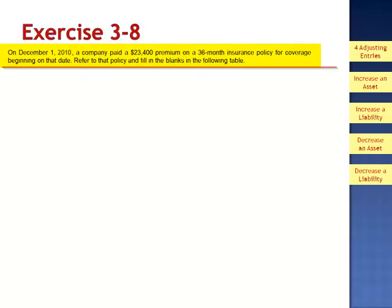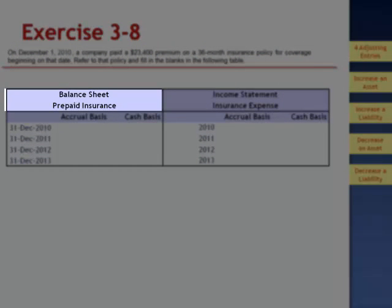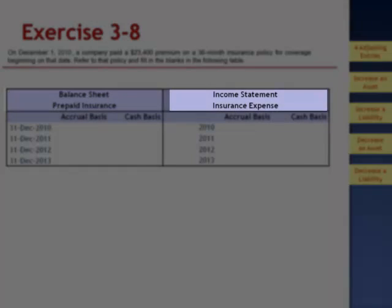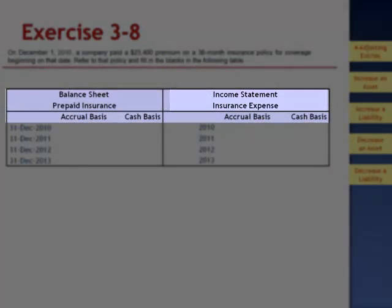Exercise 8. On December 1, 2010, a company paid a $23,400 premium on a 36-month insurance policy for coverage beginning on that date. Refer to that policy and fill in the blanks in the following table. We're asked to calculate the amount that would appear in prepaid insurance on the balance sheet and insurance expense on the income statement using the accrual basis and also the cash basis.